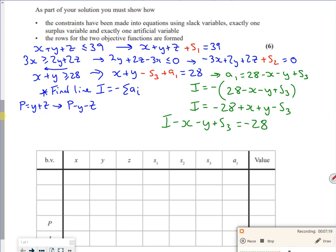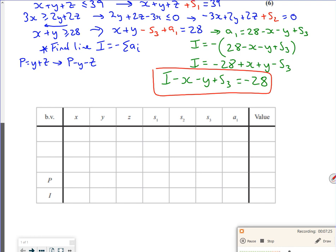I think I'll check that, make sure I've got that right. So the line at the bottom is minus 1, minus 1, 0, 0, 0, 1, 0, minus 28. The P line was minus Y, so 0, minus 1, minus 1, 0, 0, 0, 0, 0.